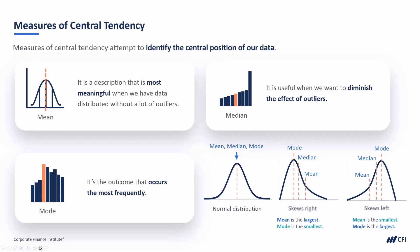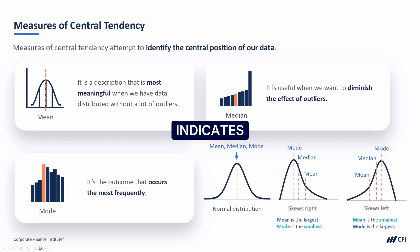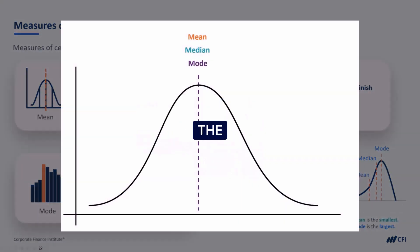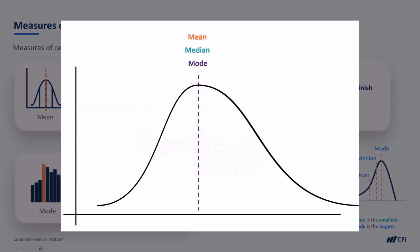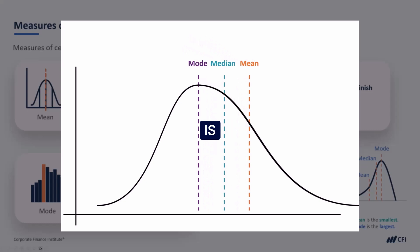If we see our mean, median, and mode line up so that the mean is the smallest and the mode is the largest, it indicates our data is skewed to the left. Or when the pattern is reversed, it would indicate that our data is skewed to the right.